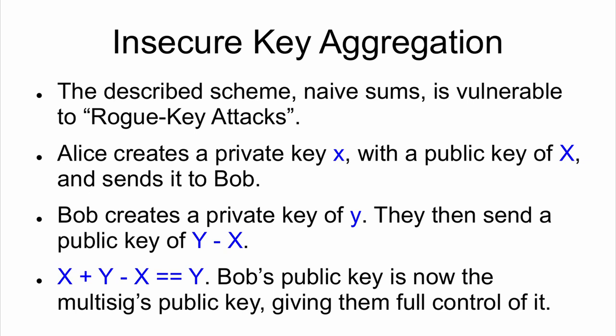This gets into the 'how to do it right' part, because you can add all these keys together and it's already insecure. The described scheme — Naive Sums — is vulnerable to what's known as rogue key attacks. Alice creates a private key x with public key X and sends it to Bob. Bob creates a private key y but sends a public key of Y minus X. So Alice's public key X plus Bob's public key Y minus X cancels out to Y. Because of that, Bob's public key is now the multisig public key and they have full control of it. This was actually noted in a project that hit proof of concept a while ago, and I submitted a report to make sure it was fixed.